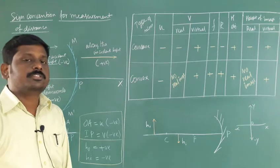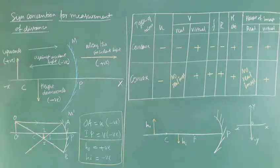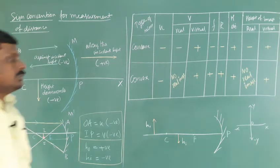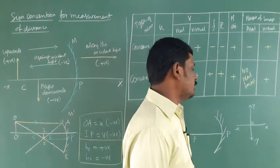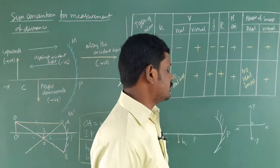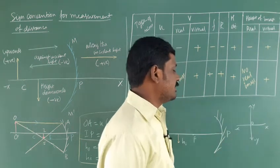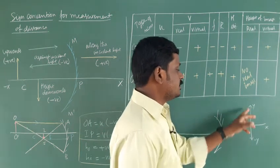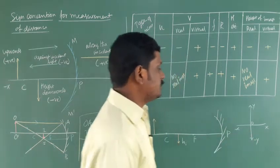In this class we are going to discuss sign convention for the measurement of distance. We follow the Cartesian sign convention. Here we have the x and x-dash axes: positive x axis, negative x axis, positive y axis, negative y axis, with O as the origin.